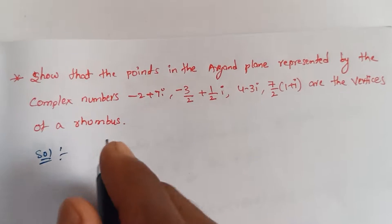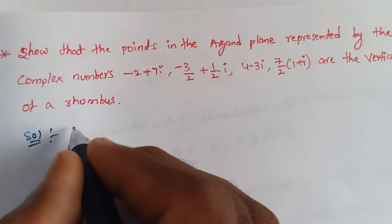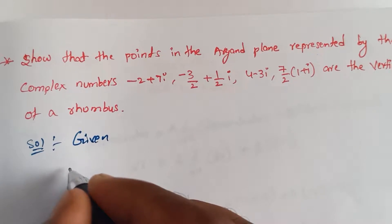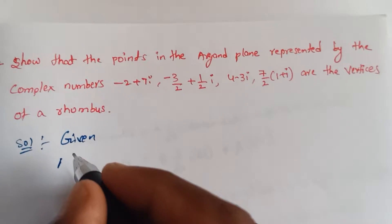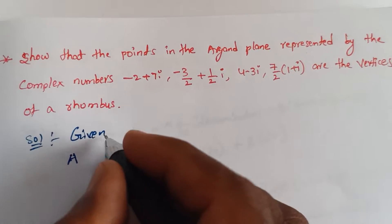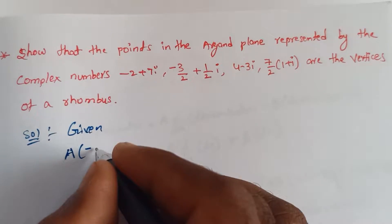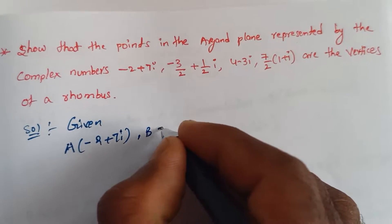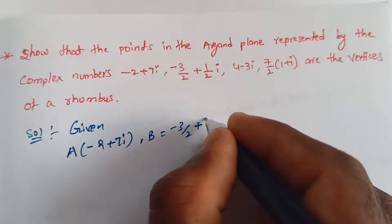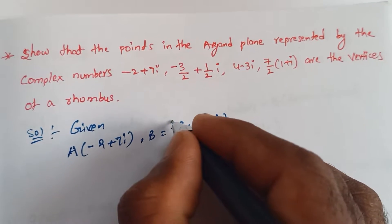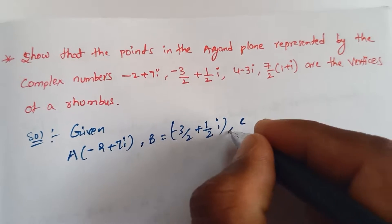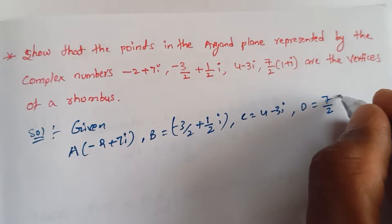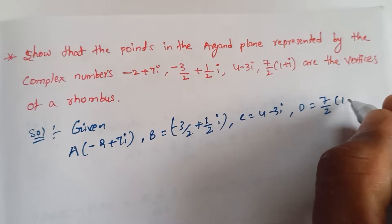This question is very simple. Given things: the rhombus vertices are — A equals minus 2 plus 7i, B equals minus 3 by 2 plus 1 by 2i, C equals 4 minus 3i, and D equals 7 by 2 into 1 plus i.